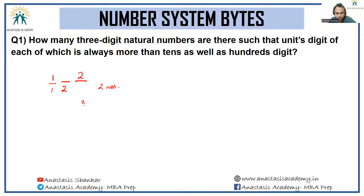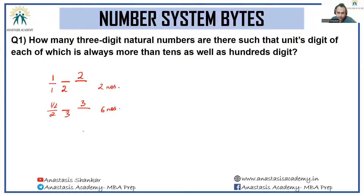If the unit digit is 3, the leading digit can be 1 or 2 — two ways — and the middle digit can be 0, 1, or 2 — three ways — giving 6 numbers.